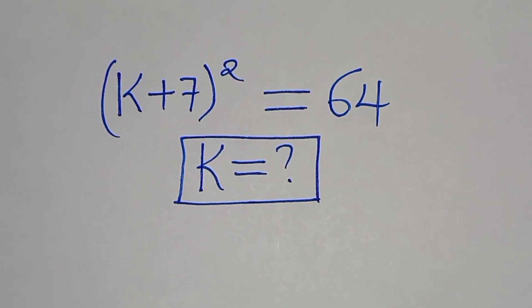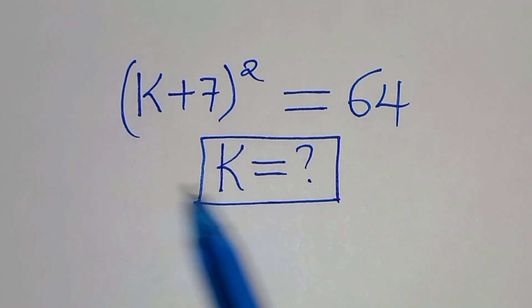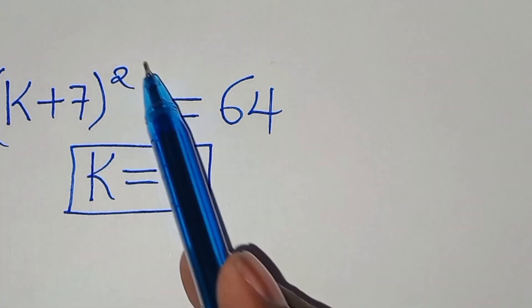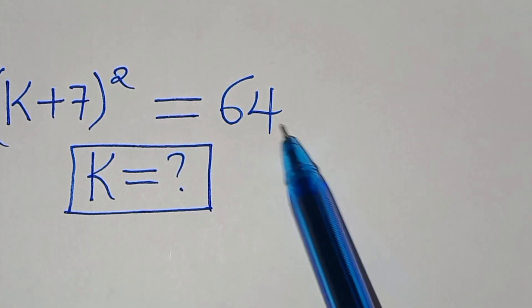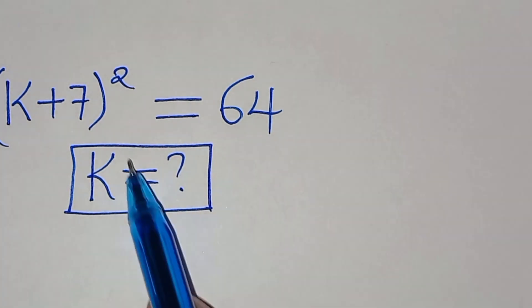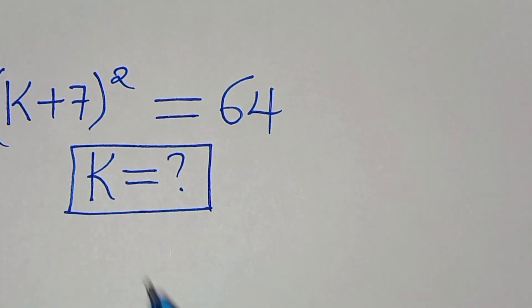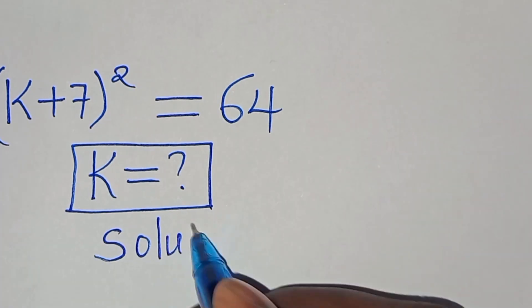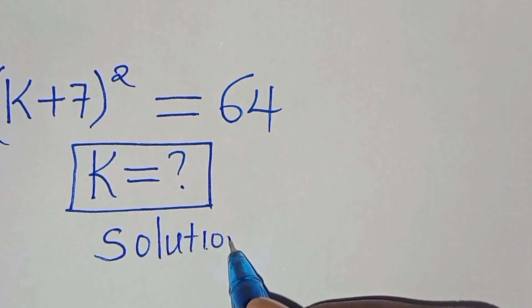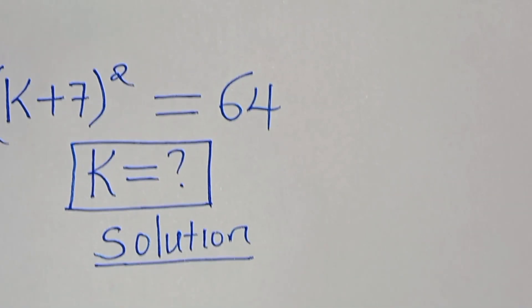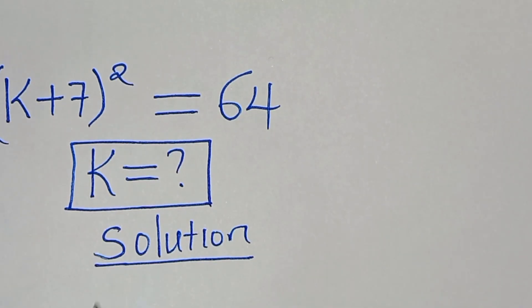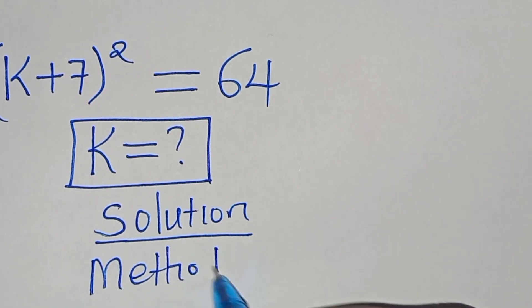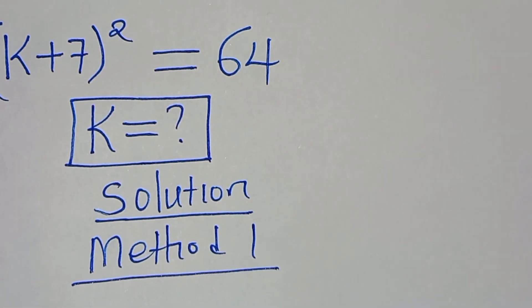You are welcome to solve this algebra problem: (k + 7) to the power of 2 is equal to 64. What is the value of k? We are going to solve this by applying three methods.